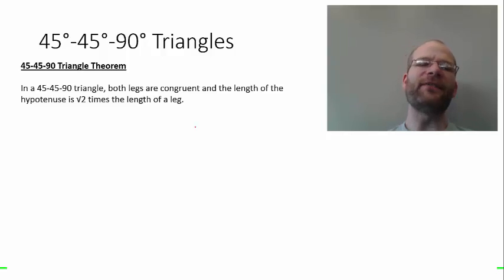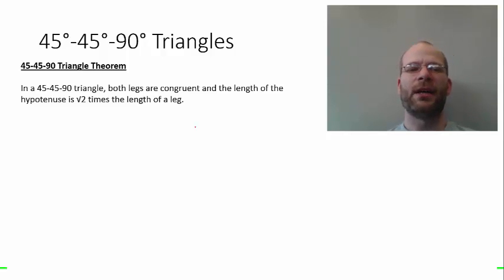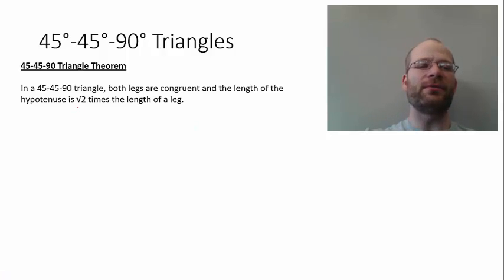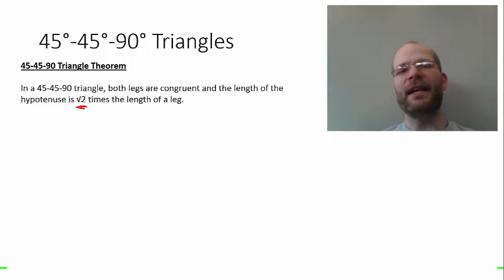It says in a 45-45-90 triangle, both legs are congruent, and the length of the hypotenuse is square root of 2 times the length of a leg.